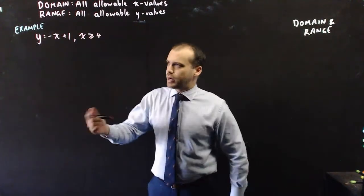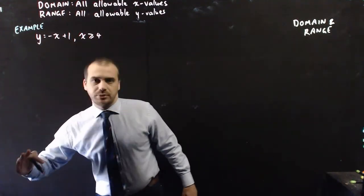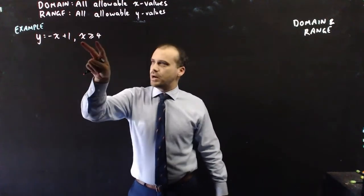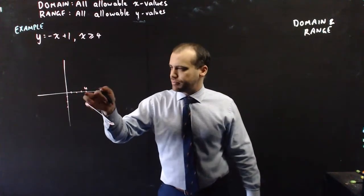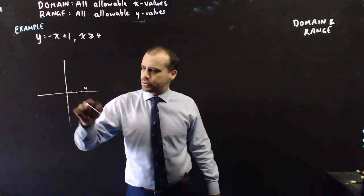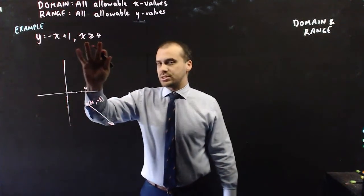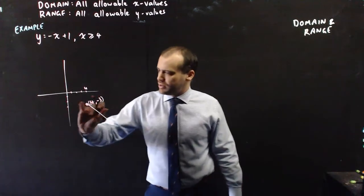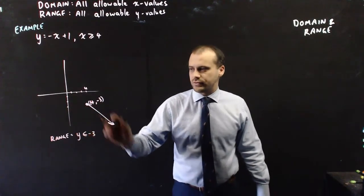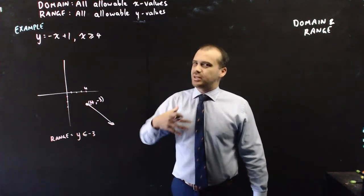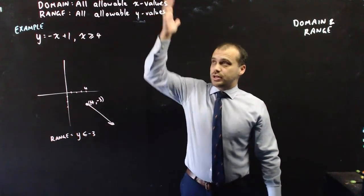Here's another example written in a different way. The relation is y equals negative x plus 1, where x is greater than or equal to 4. If we sketch this, it's a straight line, but normally we'd sketch it going from negative infinity to infinity. With the explicit domain of x greater than or equal to 4, the sketch looks different — it can only start where x equals 4. When x equals 4, y equals negative 3, so that point is (4, negative 3). The domain was explicitly stated as x greater than or equal to 4, and the range I can find: y is less than or equal to negative 3. When given questions like this, you may need to sketch it to get a sense of what you're looking at. So that's domain and range — a very simple idea: all allowable x values, all allowable y values.